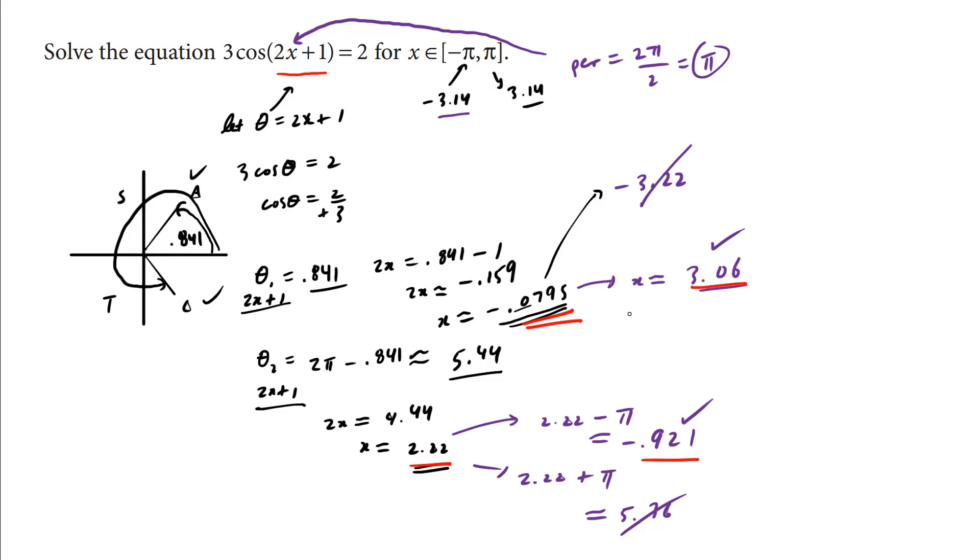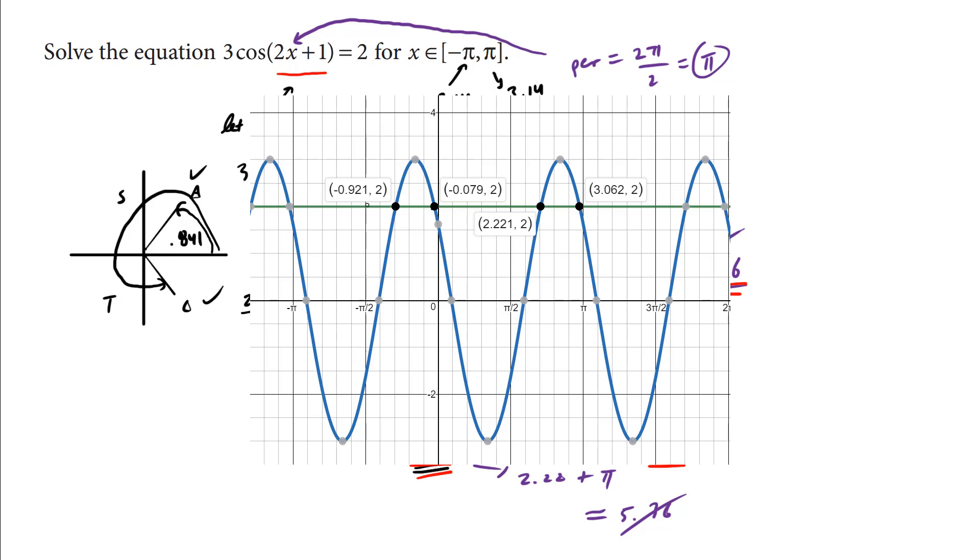So in total, we found 4 solutions, 1, 2, 3, and 4. So if you want to verify this using Desmos, you can see that indeed within negative pi to pi, we have these four solutions. It is correct.